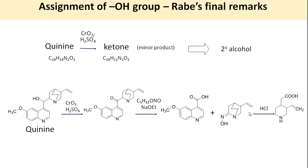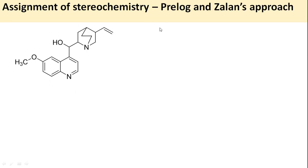Now four chiral centers remain to be confirmed. Prelog and Jalan worked on confirming the orientations at these chiral centers. Starting from miroquinine, they performed a series of synthetic transformations — dehydrogenation, reduction, nucleophilic substitution, elimination, nitrogen degradation, ring closure with diethyl malonate, carboxylic acid removal, and halogen elimination — without touching the chiral carbons throughout.